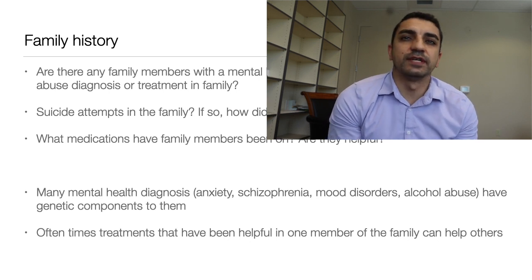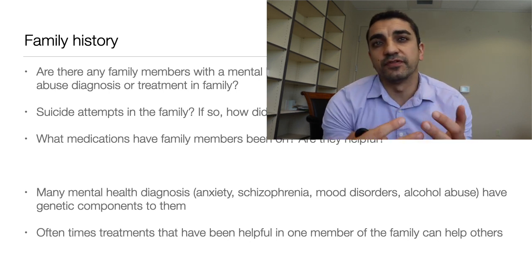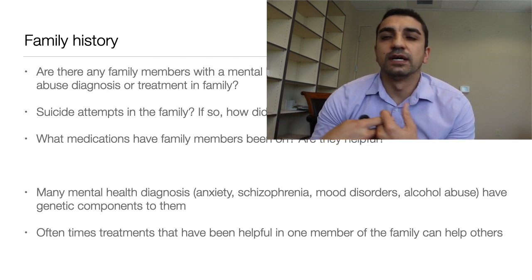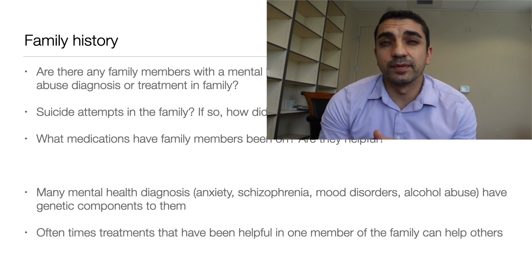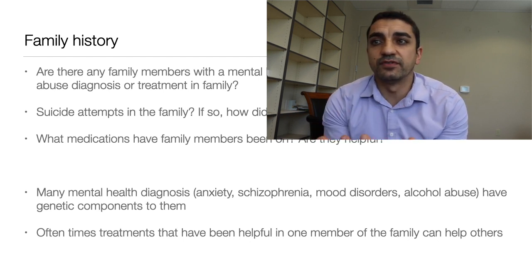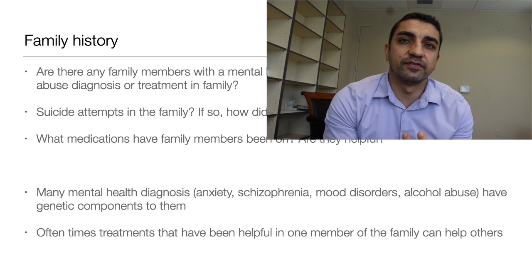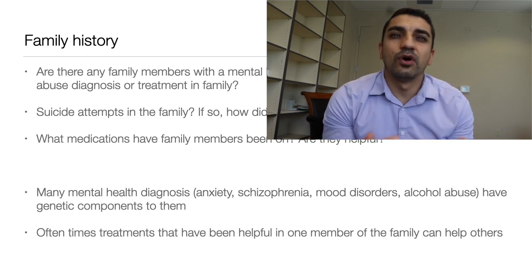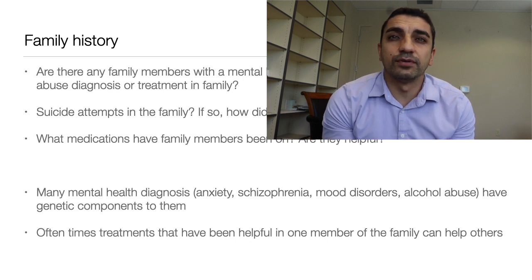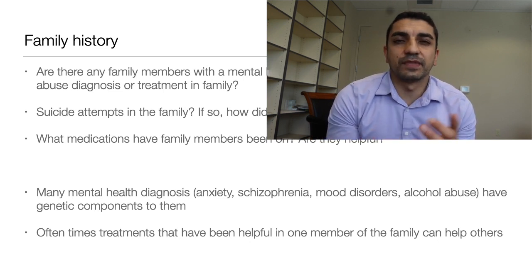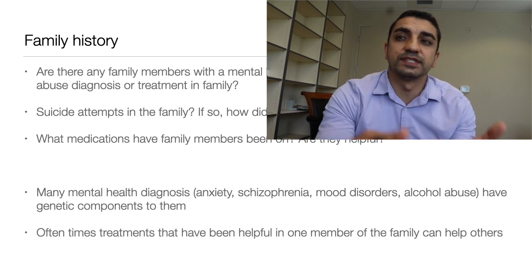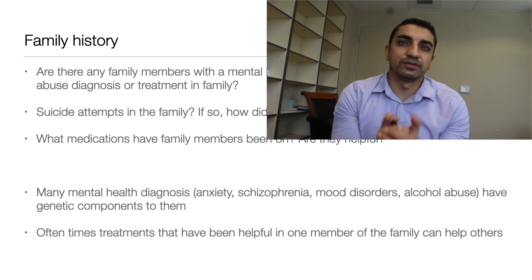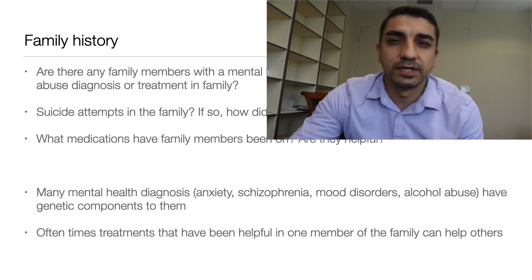Family history is important to assess because mental health diagnoses like anxiety, depression, schizophrenia, and alcoholism can run in families. What helped a family member may also help the patient. Ask whether any family members have a mental health diagnosis and how they've been treated. Is there any substance abuse in the family? Are there suicide attempts in the family? That can be a risk factor for the patient themselves. Also investigate what treatments family members have been on.